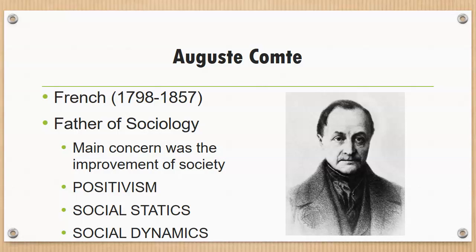Comte believed that if societies were to advance, social behavior had to be studied scientifically. Because no science of society existed, he created sociology and actually coined the term to describe this new science. One of his key concepts was positivism — the idea that we should use observation to study social behavior, and that sociology should be a science based on knowledge of which we can be positive, or sure. That's why he wanted to emphasize observable behaviors.